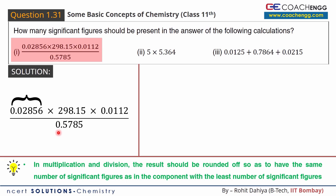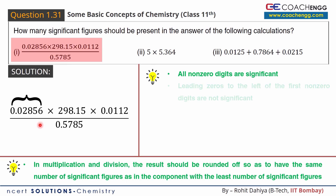Let's start identifying significant figures. For the first term, all non-zero digits are significant. The digits are 2, 8, 5, and 6 — so there are 4 significant digits.